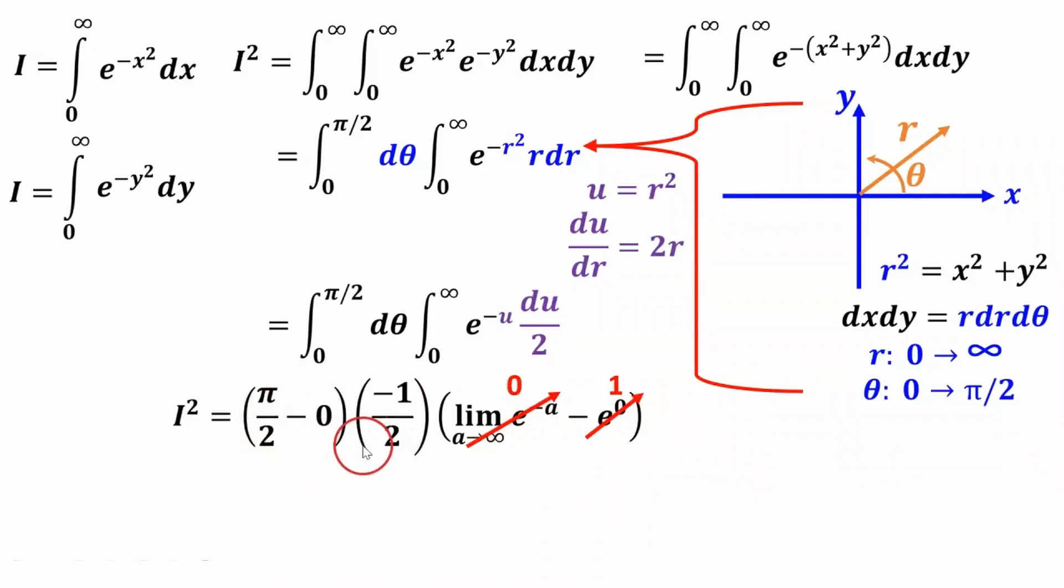These two become four. This pi here becomes pi. And then the negative cancels out with this negative. So our I squared is now pi over four. And we want I because that's what we're trying to evaluate. So we take the square root plus or minus the square root of pi over two.